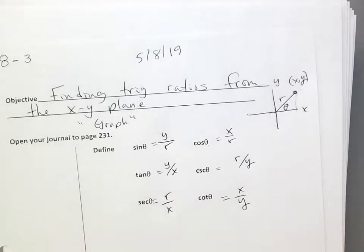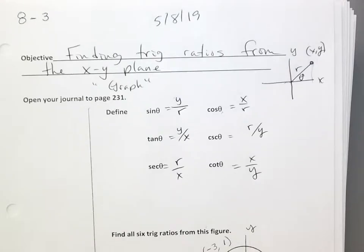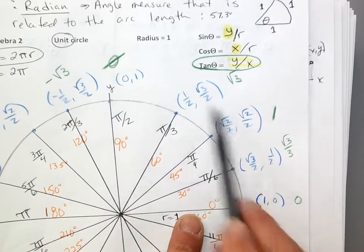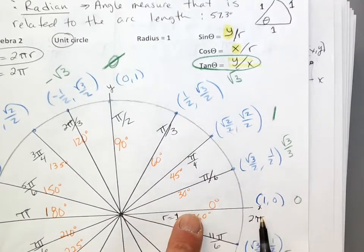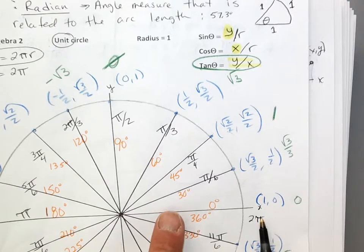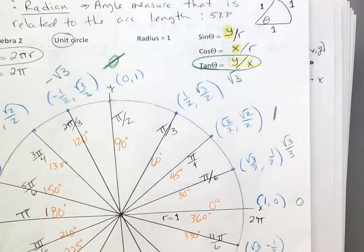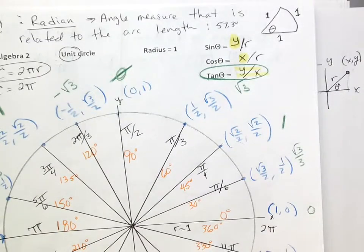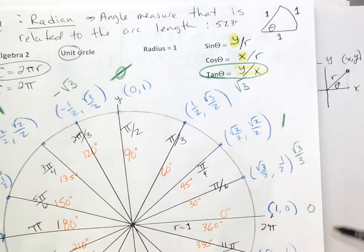Now I'm going to write that down, and I'm real quickly going to throw the unit circle back up for the kids who missed it. So if you missed class and you're trying to catch up, we rebuilt the unit circle. This time we put all of the coordinates in from our special right triangles. We built our special right triangles the day before, and we wind up with these coordinates.